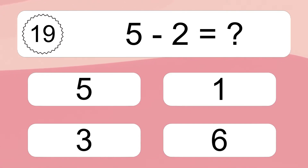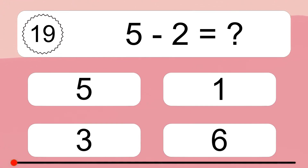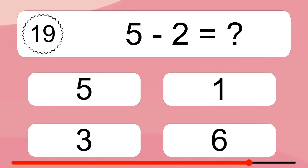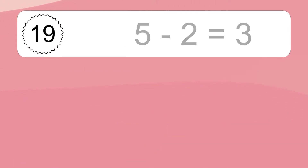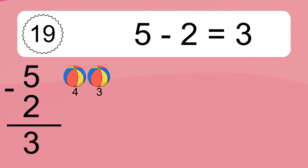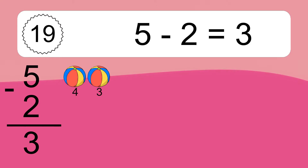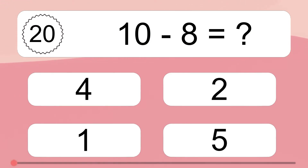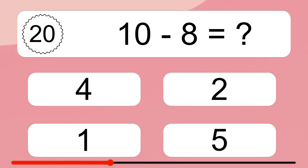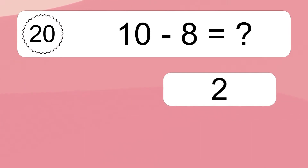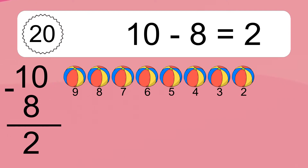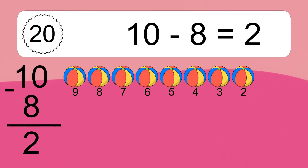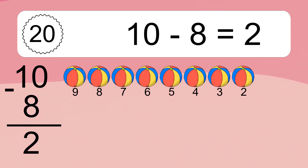5 minus 2 equals what? 5 minus 2 equals 3. Let's count it: 4, 3. 10 minus 8 equals what? 10 minus 8 equals 2. Let's count it: 9, 8, 7, 6, 5, 4, 3, 2.